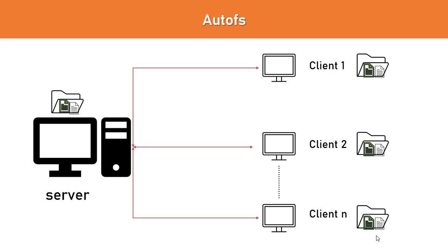With AutoFS, the service automatically mounts the shared directory — which we call the NFS share — on demand, and it will automatically unmount those shared directories when they are no longer being used. This means the client can make a connection with the server to access the shared directory only when it requires files, and whenever the connection is not required, AutoFS will automatically unmount the shared directory from the client machine.